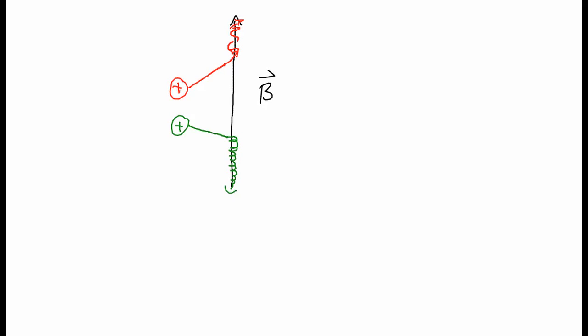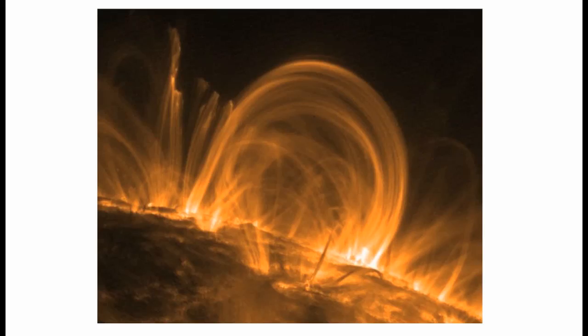It can move in either direction. But if the field is strong, the magnetic field line kind of traps the charge, keeps it moving in one direction. This has great consequences in astronomy. For example, this is a picture of a solar prominence on the sun. For reference, the earth might be that little blue dot there, just for size.